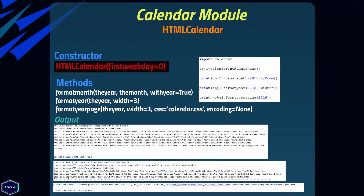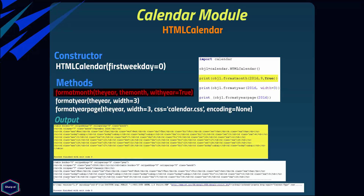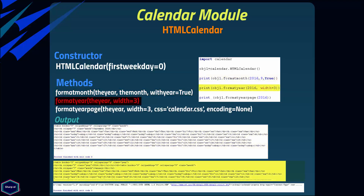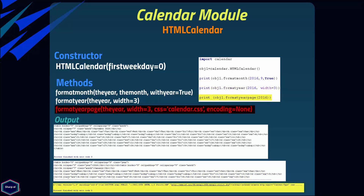The HTMLCalendar class is very similar to TextCalendar but it generates an HTML calendar. Its constructor also takes an optional argument first_weekday. The formatmonth() method returns a month's calendar as an HTML table; if the second argument with_year is true, the year is included in the header, otherwise just the month name is used. The formatyear() method returns a year's calendar as an HTML table, where the width argument specifies the number of months per row. The formatyearpage() method returns a year's calendar as a complete HTML page, with arguments for width, CSS stylesheet name, and encoding.